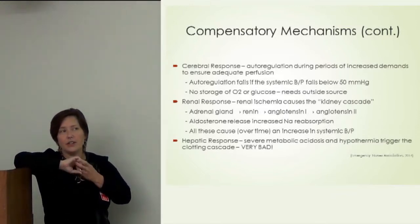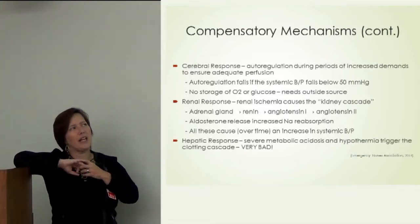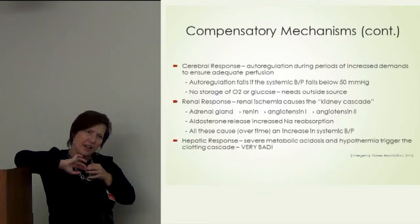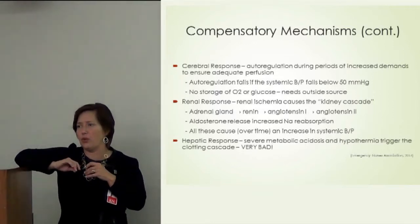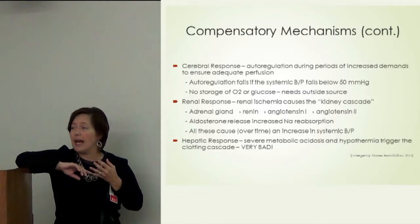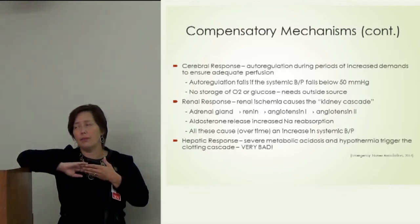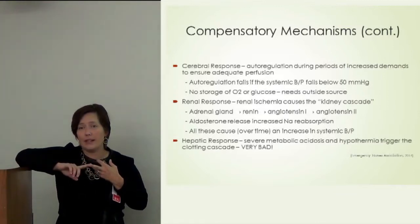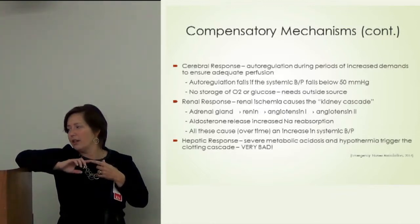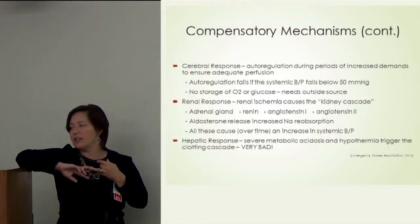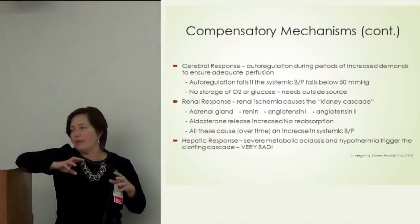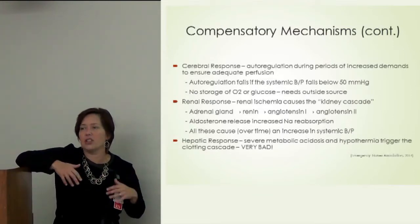The renal response: when blood pressure drops, the kidneys start retaining sodium and water, and you see a decrease in urine output. Renal ischemia causes the adrenal gland to secrete renin, which converts angiotensin I to angiotensin II in the lungs via ACE (angiotensin-converting enzyme), stimulating aldosterone — causing sodium and water reabsorption. Over time this increases systemic blood pressure, but it is a slow compensatory mechanism.